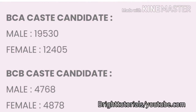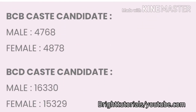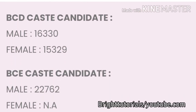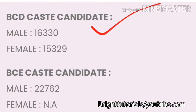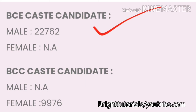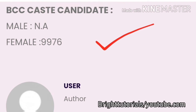For BCA caste in Biomedical Engineering: male cutoff is 19530 and female cutoff is 12405. For BCB caste: male cutoff is 4768 and female cutoff is 4878. For BCD caste: male cutoff is 16330 and female cutoff is 15329. For BCE caste: male cutoff is 22762 and female cutoff is not available. For BCC caste: female cutoff is 9976.